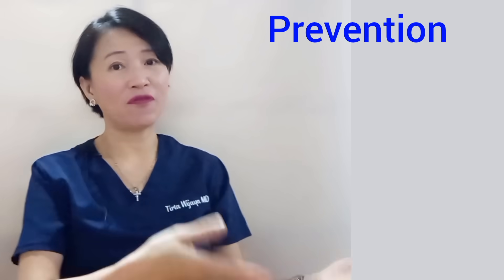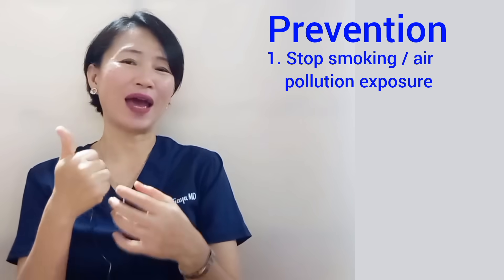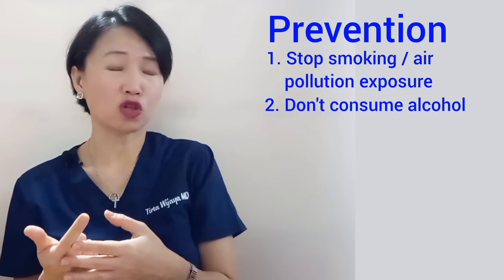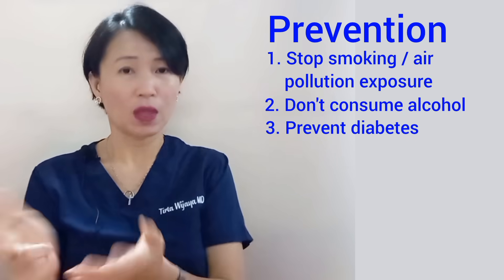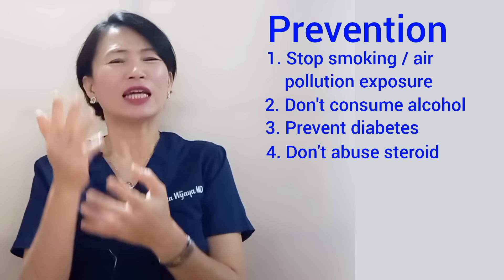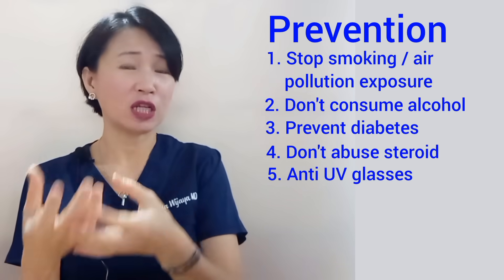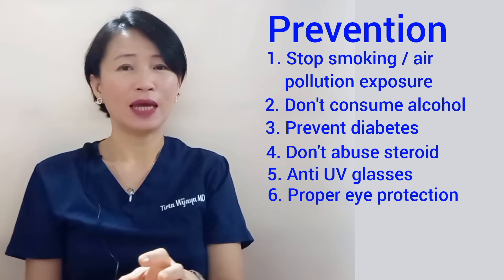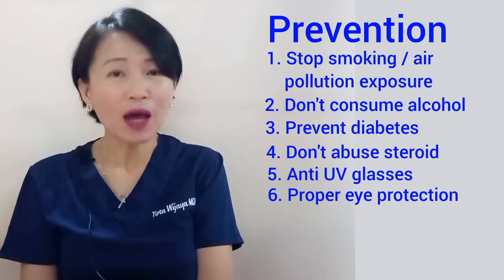As for prevention, it depends on the cause of the cataract. Cataract caused by smoke or air pollution is best prevented by stopping smoking and avoiding air pollution. Cataract related to alcohol can be prevented by not consuming alcohol. Cataract linked to diabetes can be prevented by preventing diabetes. Cataract as a side effect of long-term corticosteroid abuse can be avoided by not abusing corticosteroids. Cataracts from UV radiation can be prevented by wearing proper anti-UV glasses, and radiation treatment for cancer should be done with proper protection following the radiation therapist's instructions. Cataract related to eye injuries can be prevented by using proper eye protection during risky activities.